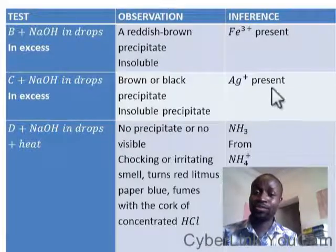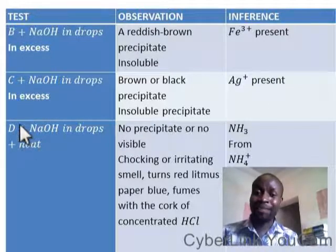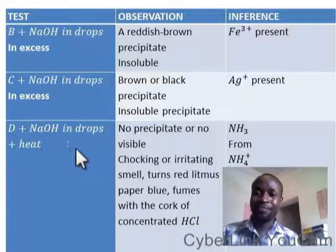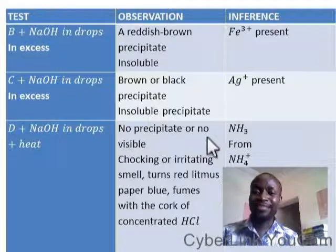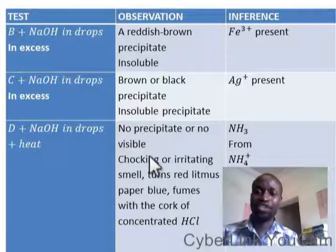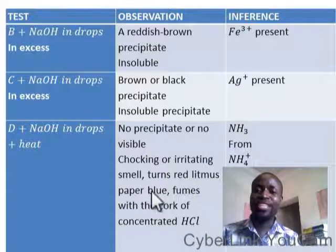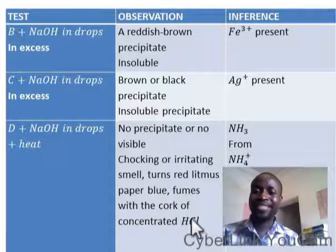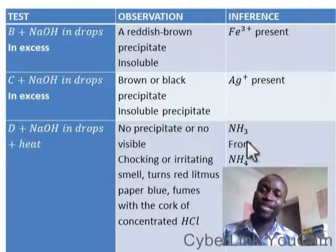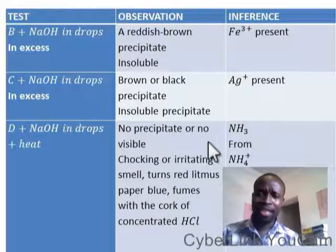If you take sample D plus sodium hydroxide and heat it, and there is no precipitate or no visible reaction, but the smell is choking or irritating, and it turns red litmus paper blue, and when you bring a cup of concentrated HCl it forms dense white fumes — you are talking about ammonia.